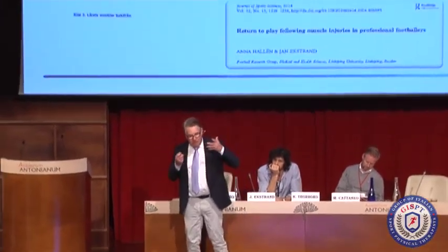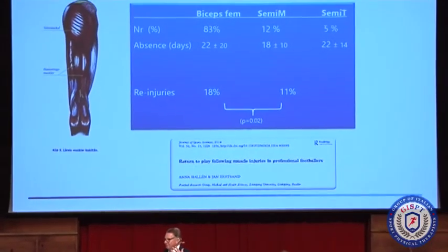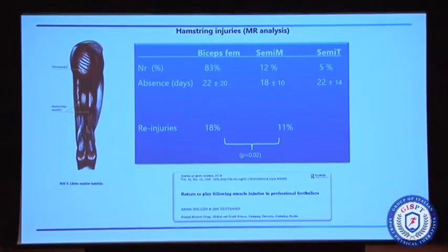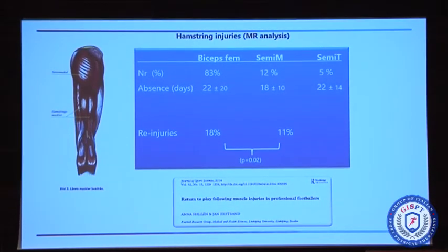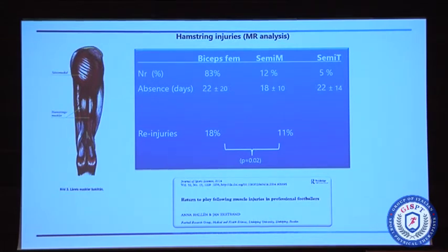If we go deeper and ask which of the hamstring muscles is injured, we found that biceps femoris is most commonly injured — that's shown in several other studies too. Semitendinosus and semimembranosus are not as common. But if you look at the absence data, there's no difference. The reason is probably that they are treated in a similar way in elite clubs, though I can't be sure.